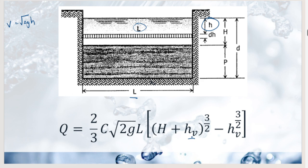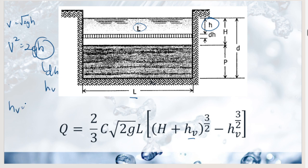For a general V-notch with equal side inclinations, the formula becomes: Q = (8/15)·C·√(2g)·tan(θ/2)·H^(5/2). The term (8/15)·C·√(2g) can be replaced by the weir factor C-double-w. At 90 degrees, where tan(45°) = 1, the formula simplifies to: Q = 1.4·H^(5/2) for SI, or Q = 2.5·H^(5/2) for English units.